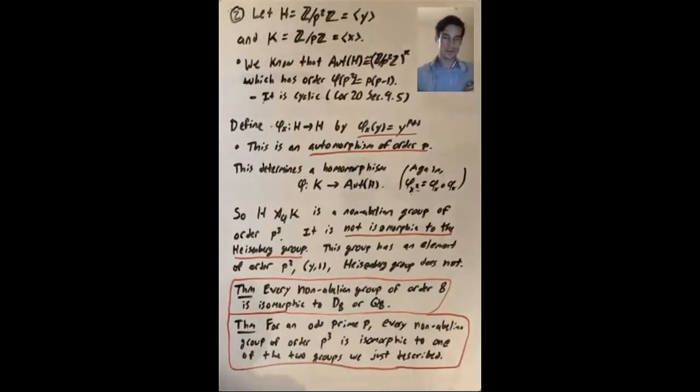So okay, we found these two non-abelian groups of order p cubed, but what else is there? And here is a classification theorem. I don't think we'll do all of the details of this in lecture, but I'll give you a reference in the summary of lecture notes page.